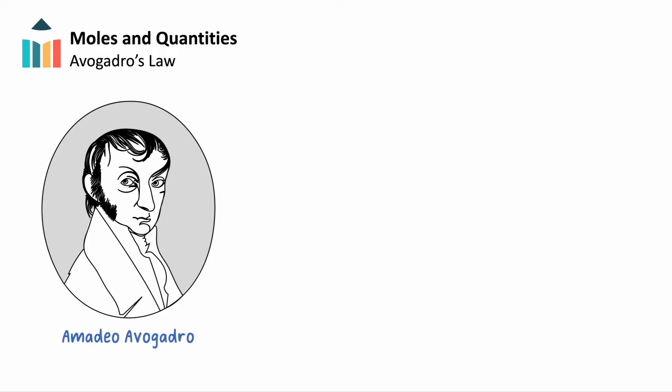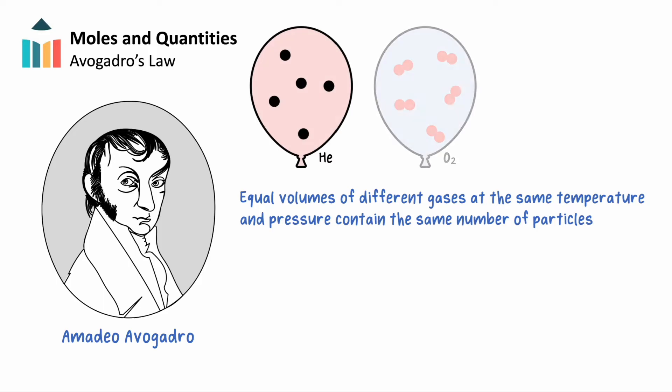In 1811, the Italian Amadeo Avogadro proposed that equal volumes of gases, at the same temperature and pressure, would contain the same number of particles, independent of the identity of the gas.